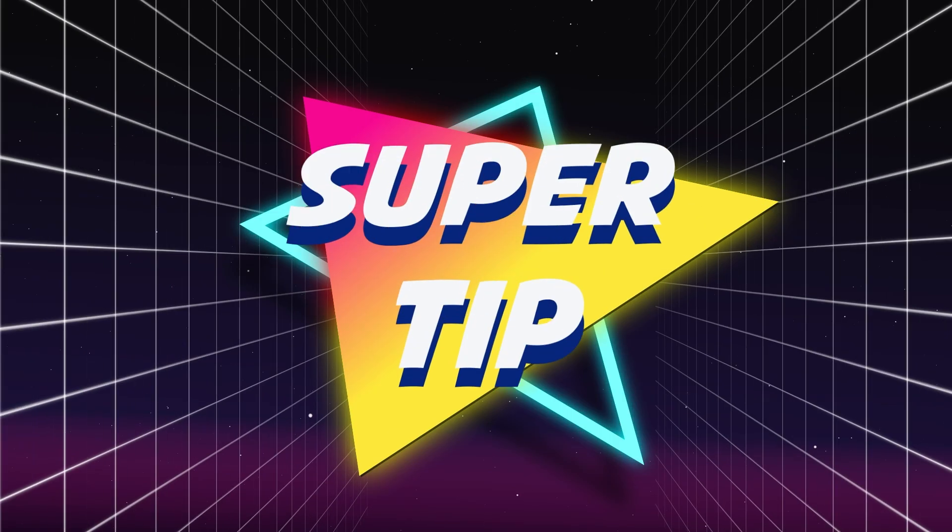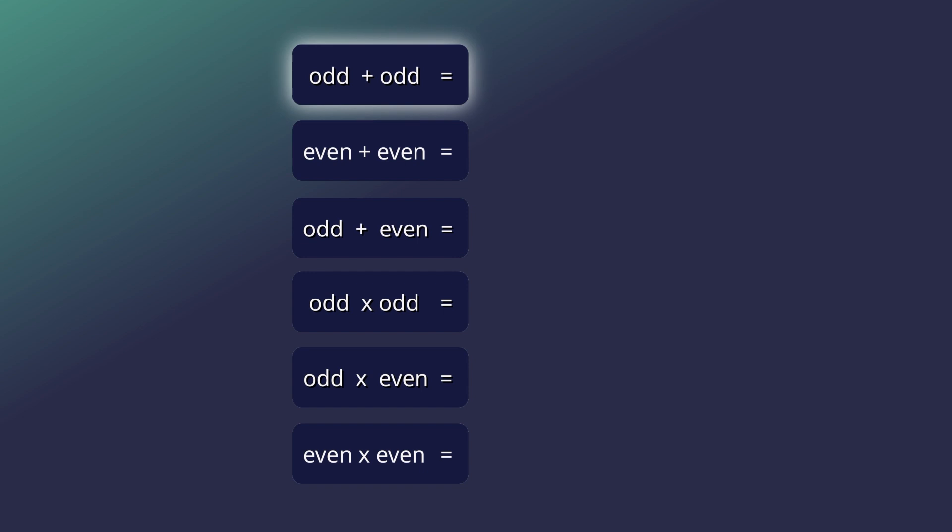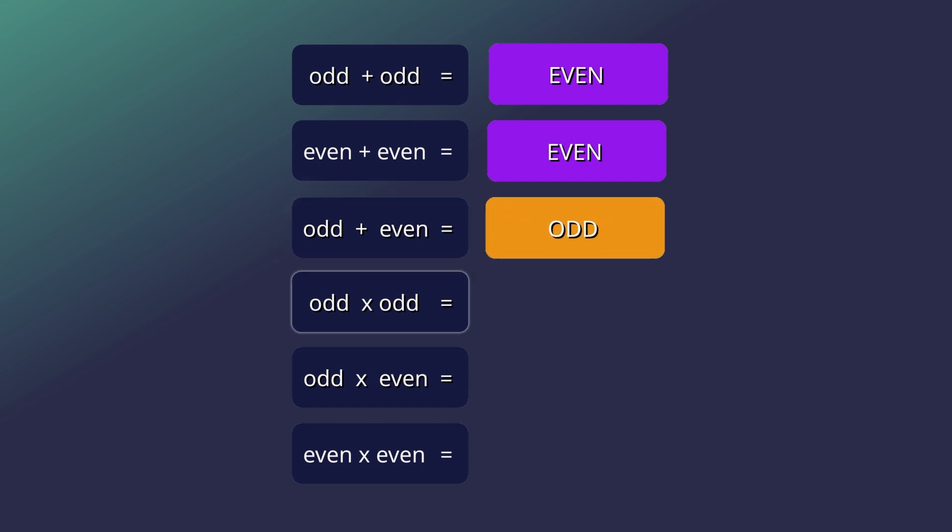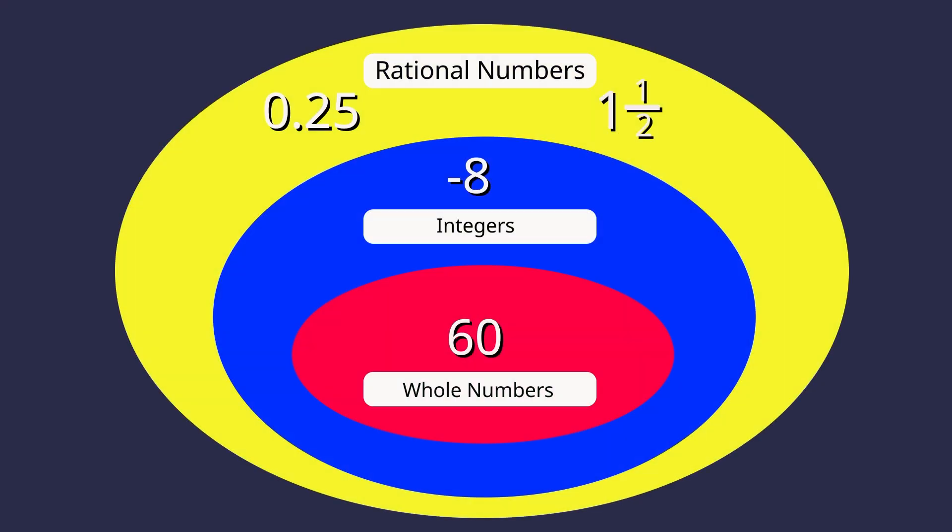Here is the super tip of the day. Odd plus odd equals even. Even plus even equals even. Odd plus even equals odd. Odd times odd equals odd. Odd times even equals even. Even times even equals even. Knowing this can come in handy when you learn more about number theory.